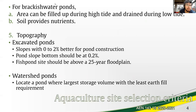Additional conditions for brackish water ponds include the need to easily fill up the pond in cases of high tide and drain during low tide. Another thing is the provision of soil nutrients, since estuarine waters are known for volatile figures of various parameters such as temperature, pH, and salinity.